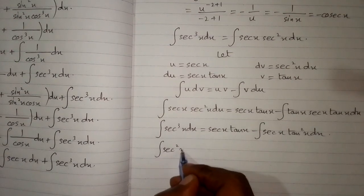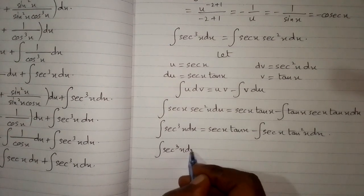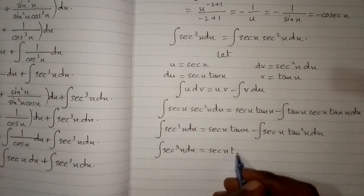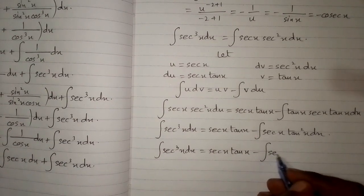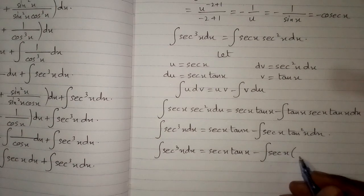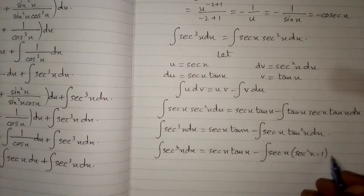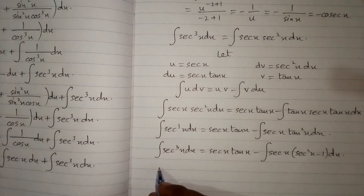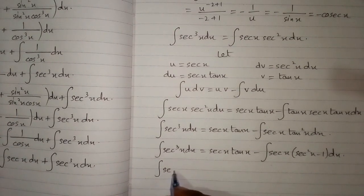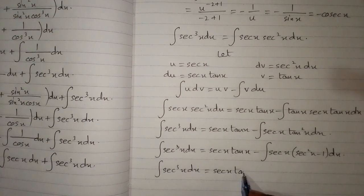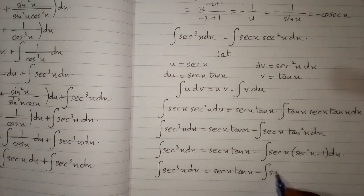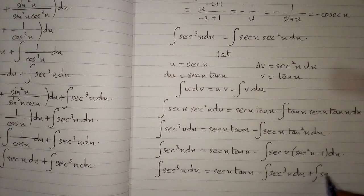Then the integral of sec cubed x dx equals sec x tan x minus the integral of sec x, and in place of tan squared x we substitute sec squared x minus 1 dx. This gives the integral of sec cubed x dx equals sec x tan x minus the integral of sec cubed x dx plus the integral of sec x dx.